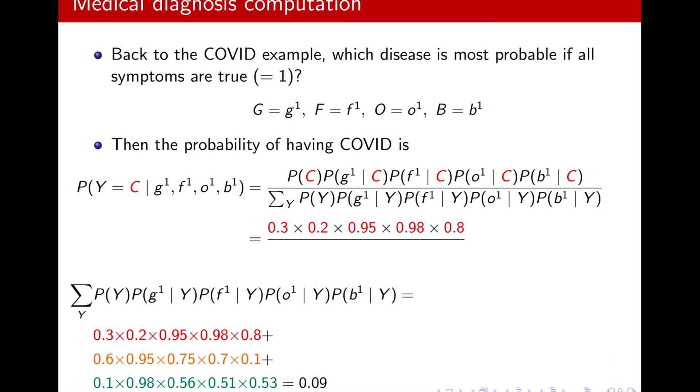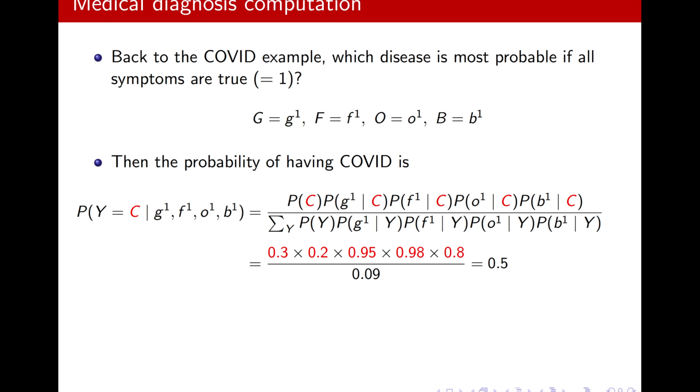And if I do the math, I will get 0.09. And finally, the probability will be 0.5. So, with a 0.5 probability, the disease is COVID. And then I can calculate the other classes.